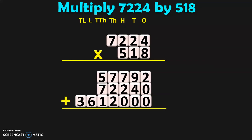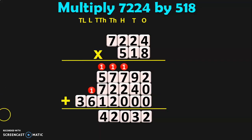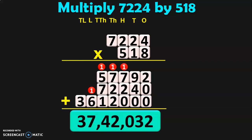Now we have the 3 products and we have to add them. 2 in the 1s place. 9 plus 4 is 13 — 3, carry over 1. 1 plus 7 is 8, 8 plus 2 is 10 — 0, carry over 1. 1 plus 7 is 8, 8 plus 2 is 10, 10 plus 2 is 12 — 2, carry over 1. 1 plus 5 is 6, 6 plus 7 is 13, 13 plus 1 is 14 — 4, carry over 1. 1 plus 6 is 7. And in the 10 lakhs place, you have 3. So the answer is 37,42,032.